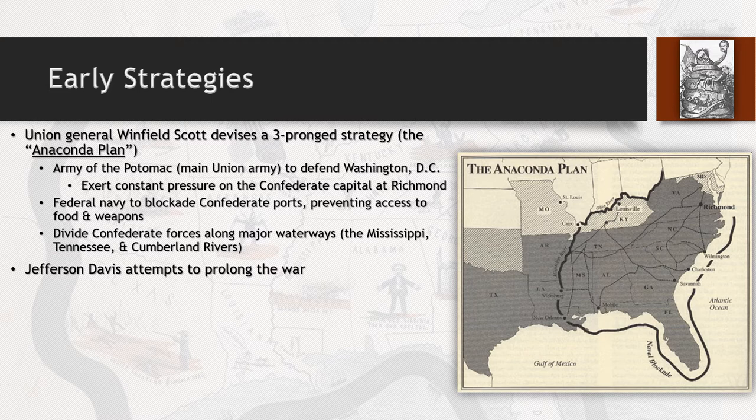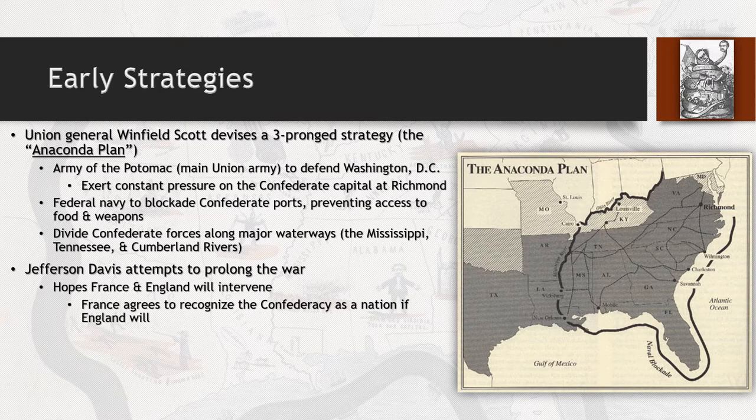The Confederate strategy, as decided by Jefferson Davis — who is made president of the Confederacy — is to prolong the war as long as possible, hoping that England and France will eventually intervene on their behalf. The South has had a long-standing commercial relationship with Europe, sending cotton overseas, with 80% of the cotton produced in the South being used by England. It thinks that because it has been exporting so many goods, these countries will eventually see the need to intervene.